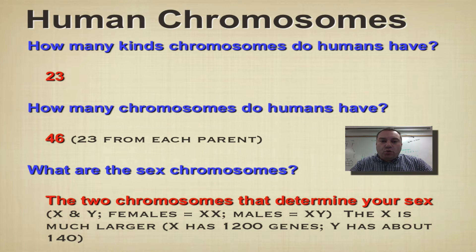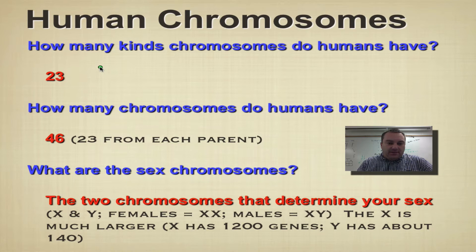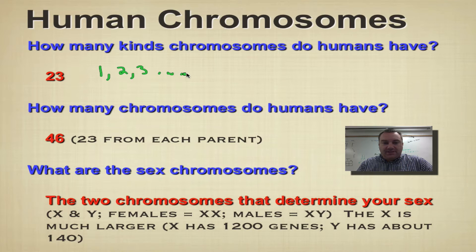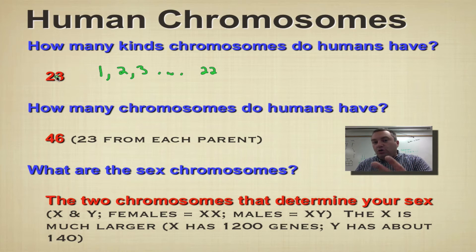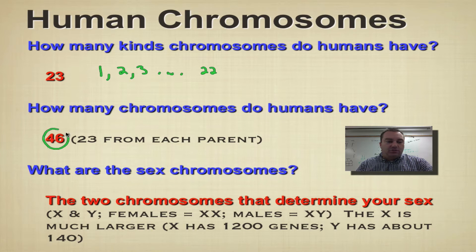Humans have 23 different kinds of chromosomes. The first 22 are called chromosome number one, chromosome number two, chromosome number three, and so on until you get down to chromosome number 22. Out of these 23 kinds, you have two of each, because you got 23 from dad and 23 from mom, and that gives you a total of 46.